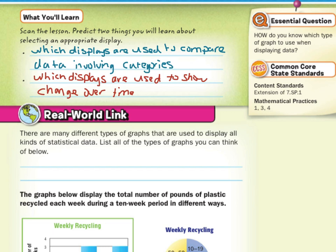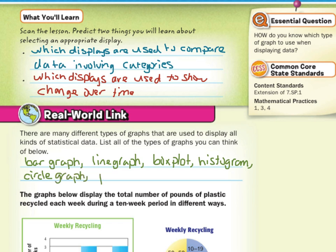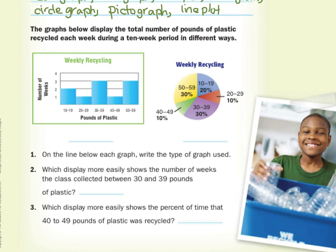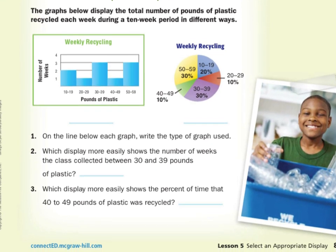List all of the types of graphs you think of below. Well, I know a lot so let's go through a whole list. We could have a bar graph, a line graph, our box and whisker plot or just box plot, a histogram. What about our circle graph, which is the same thing as a pie chart. We have a pictograph. And lastly, let's just stop here at line plot.